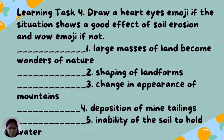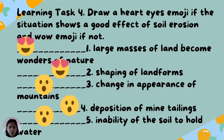For Learning Task Number 4, draw a heart-eye emoji if the situation shows a good effect of soil erosion, and a wow emoji if not. Number 1: Large masses of land became wonders of nature — heart-eye emoji. Number 2: Shaping of landforms — heart-eye emoji. Number 3: Change in appearance of mountains — wow emoji. Number 4: Deposition of mine tailings — wow emoji. Number 5: Inability of the soil to hold water — wow emoji.